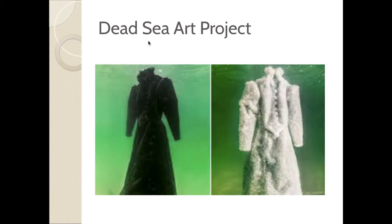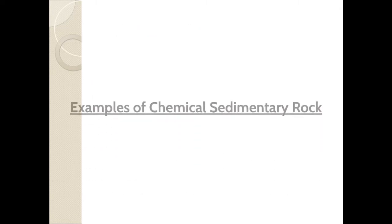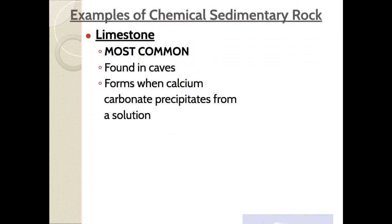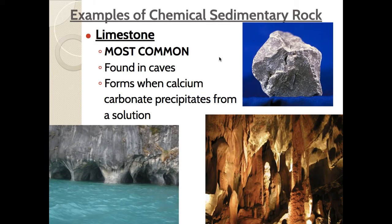Here's a fun example: an artist in Israel did a project where they took various objects and put them in the Dead Sea, which has a very high salt concentration. After leaving them for a month, six months, or a year, little salt crystals grew on the objects — the salt was dissolved in the water and formed crystals on various objects. That's your chemical sedimentary rock. Limestone is another example of a chemical sedimentary rock made in caves — caves have calcium carbonate mixed in with water, and when water drips down, the minerals get left behind, forming stalactites and stalagmites.